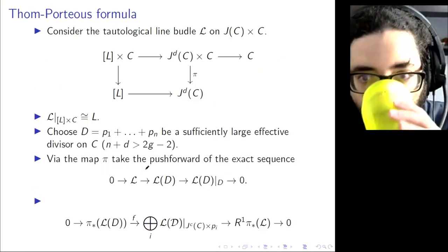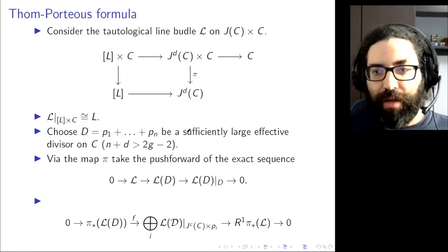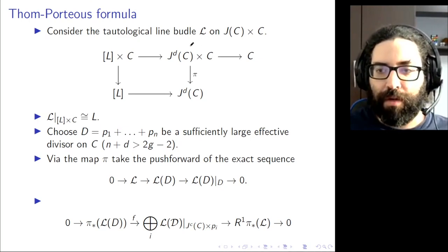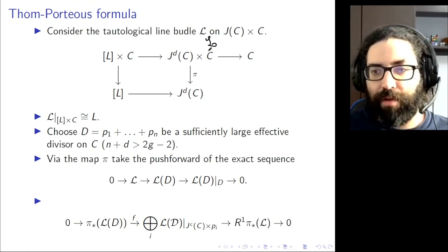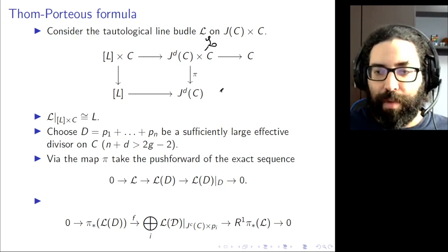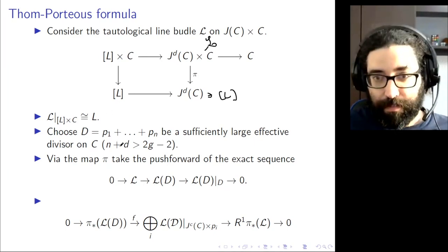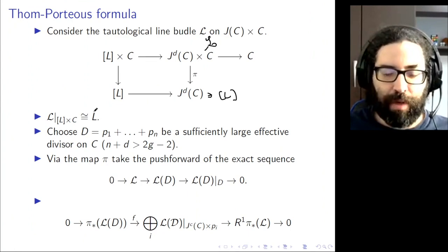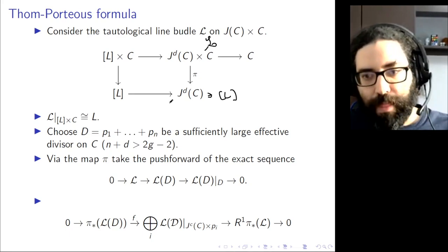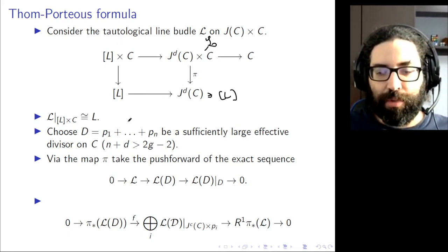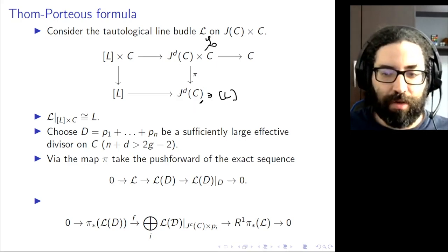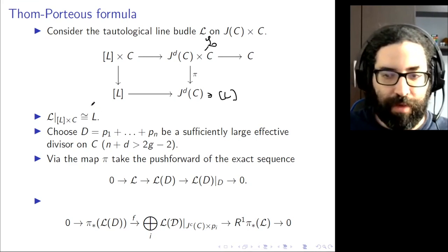How do we compute the class of this locus? We have the Jacobian, and we take the universal family, which is the Jacobian times the curve. We have a universal line bundle L on this product. A point in the Jacobian parametrizes line bundles on C of degree d, so if we have a point in the Jacobian, we look at the fiber — a copy of the curve — and the tautological line bundle restricted to this fiber gives precisely the line bundle L. The idea to compute the class of the Brill-Noether locus is to use the Thom-Porteous formula: we describe a map of sheaves on the Jacobian whose degeneracy locus is precisely the Brill-Noether locus.